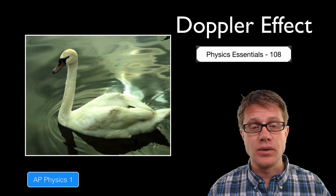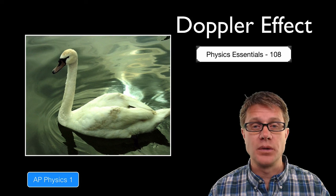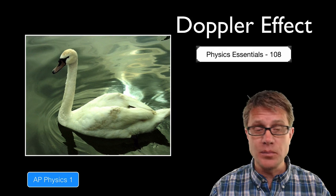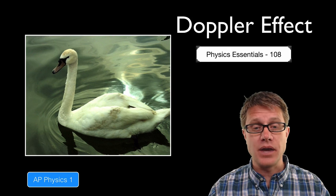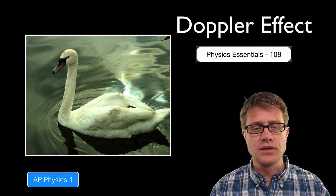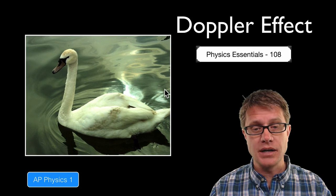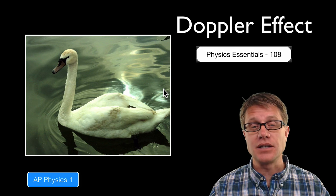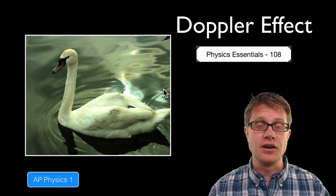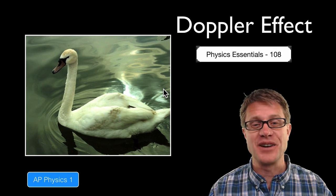You could see the same thing in water waves. This swan we know is swimming from right to left. How do we know that? Well it is generating water waves. And the ones in front of it you can see are getting bunched up. And the ones behind it are actually spreading out. So that tells us it is moving to the left. It also has its beak pointed in that direction as well.